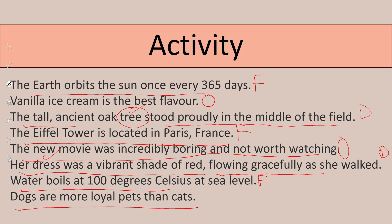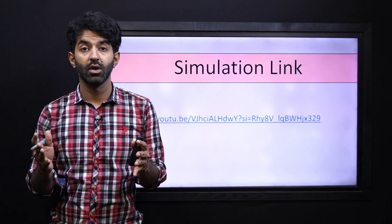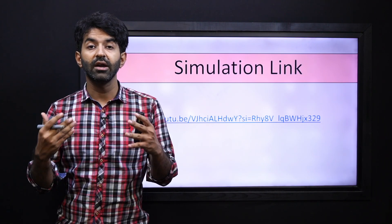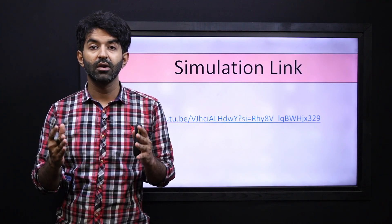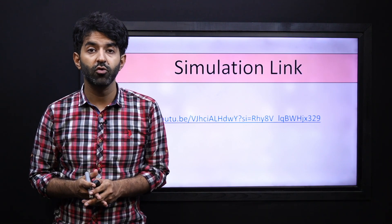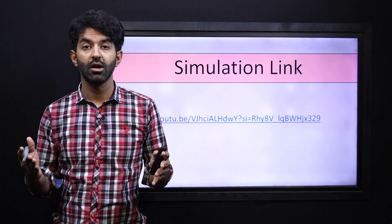'Dogs are more loyal pets than cats' — somebody else can say no, cats are more loyal than dogs. So this is an opinion. Now when you can discuss the upcoming activity, you can communicate and have group discussions, and you can clearly see the rhetorical patterns with facts, opinions, and descriptions.